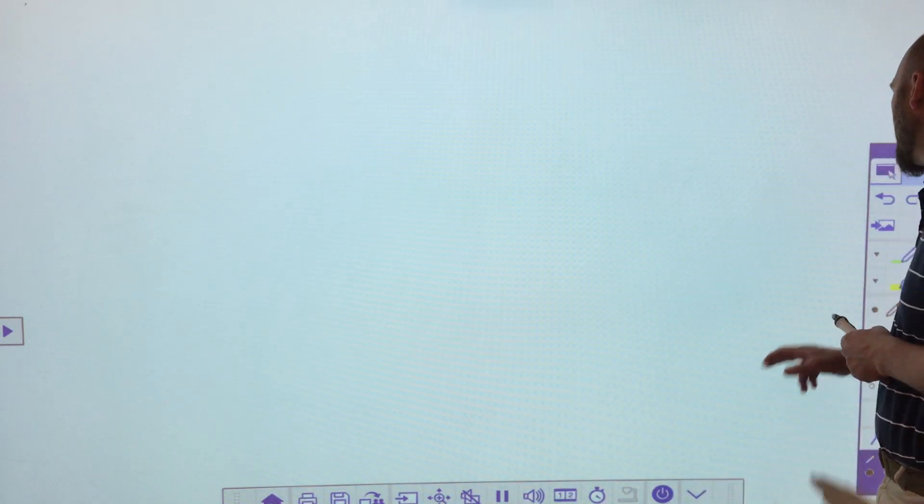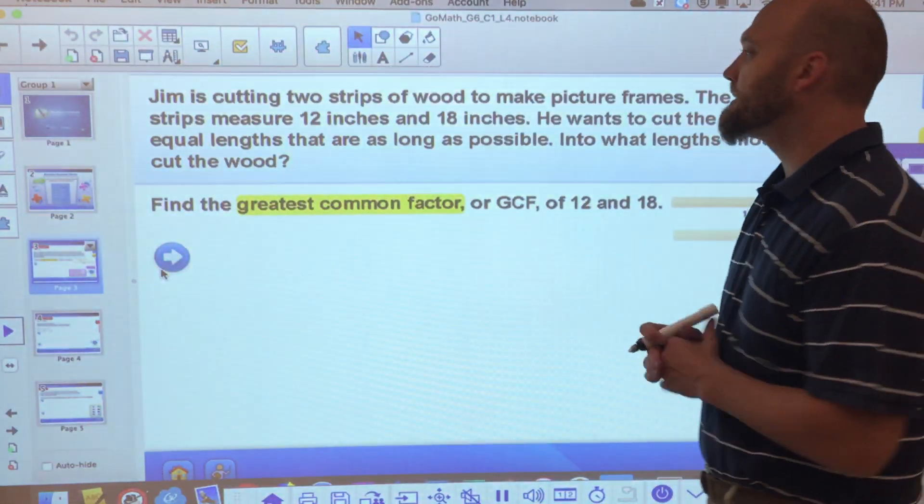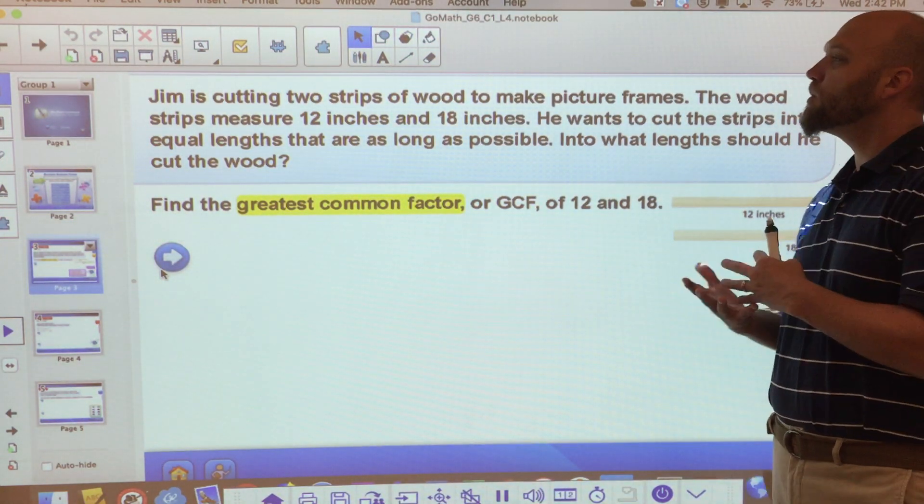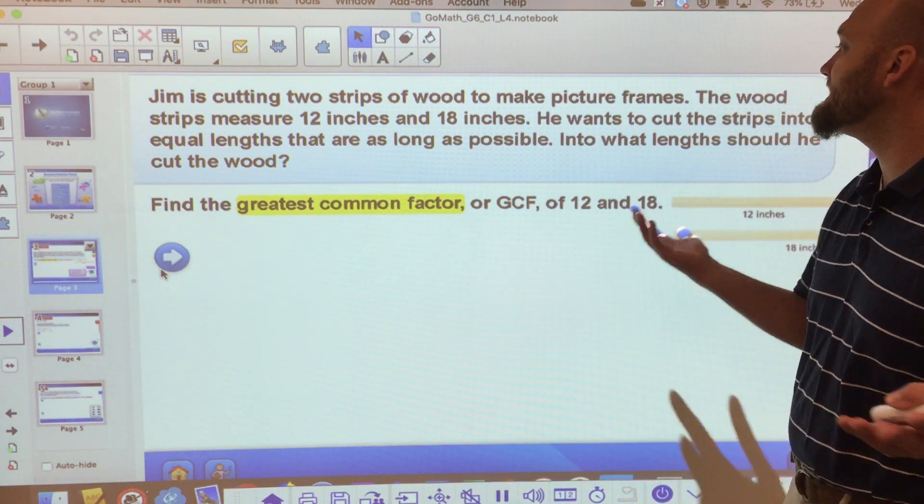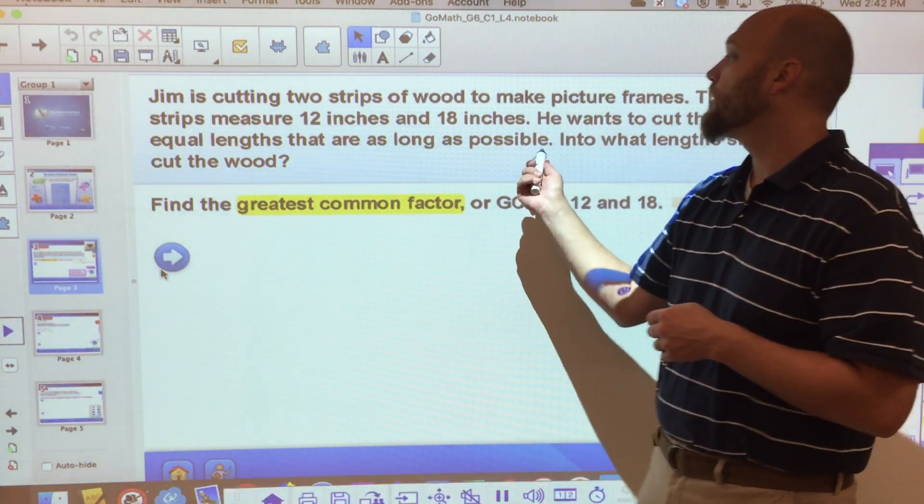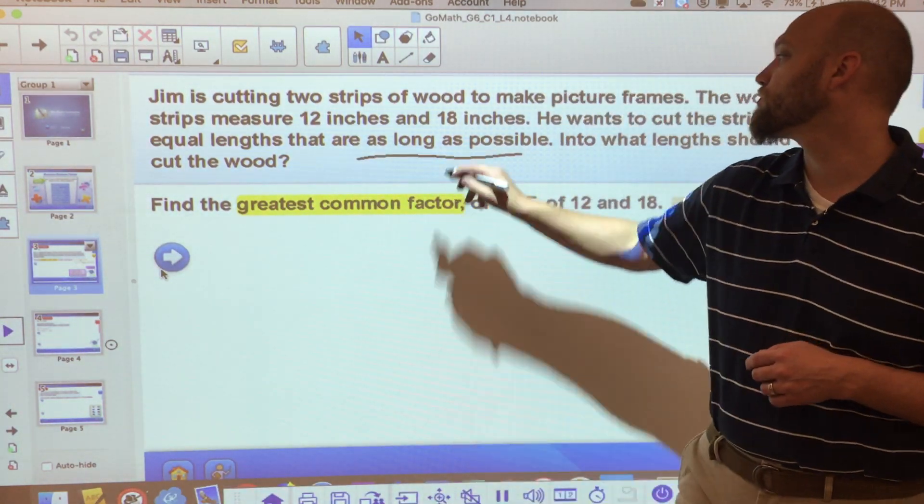So what that looks like in a word problem might be something like this. Jim's cutting two strips of wood to make picture frames. The wood strip measures 12 inches and 18 inches. He wants to cut the strips into equal lengths that are as long as possible. Long as possible. Greatest.